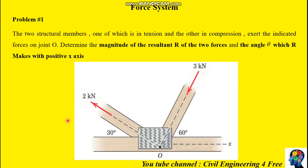Let's proceed to the problem. The two structural members, F1 which is 2 kilonewton and F2 which is 3 kilonewton, act at joint O and make an angle of 30 degrees and 60 degrees with the horizontal x-axis. We are required to determine the magnitude of these two forces, which is the vector sum of the two forces, the resultant, and the angle in which the resultant makes with the positive x-axis.